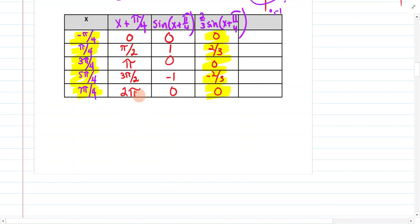The sine of these: 0, 1, 0, negative 1, 0. And then take two-thirds of this column. You get 0, two-thirds, 0, negative two-thirds, 0.